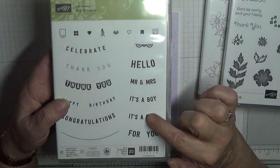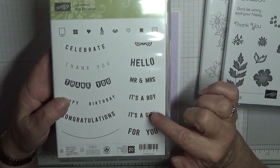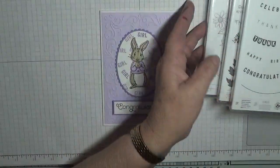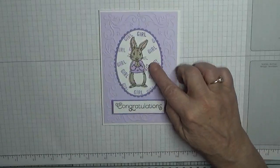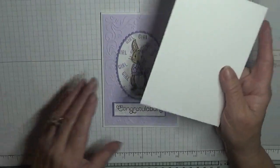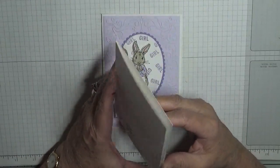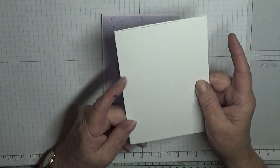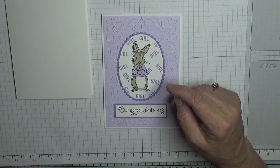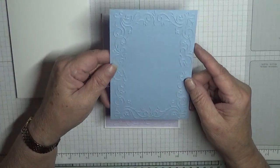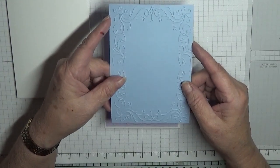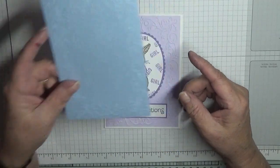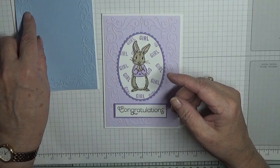I cut these stamps up, the girl and the boy off, and we're going to use the word boy to make the card. We've used a card base of eight and a quarter by five and seven eighths, scored at four and one eighth, folded in half and burnished. And a piece of seaside spray of five and five eighths by three seven eighths to go on top.